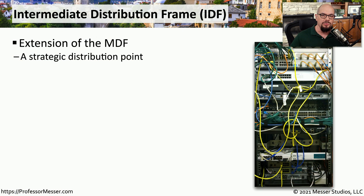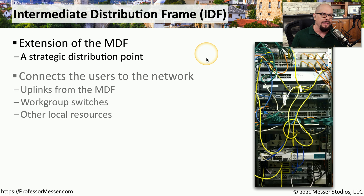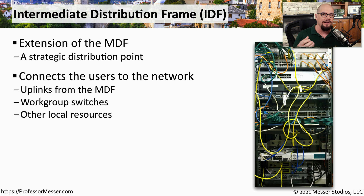In larger buildings where you may have multiple floors, there needs to be a midpoint between the user's desk and the data center, which may be on a different floor. This midpoint is our intermediate distribution frame, or IDF. The IDF is usually closest to the user, so all of the users on a floor would connect to the IDF, and each IDF would then connect to the MDF.